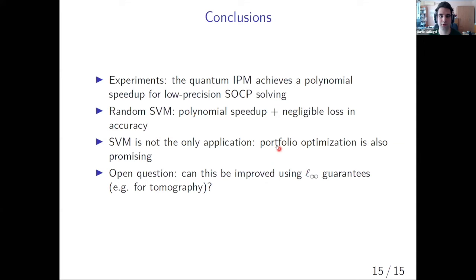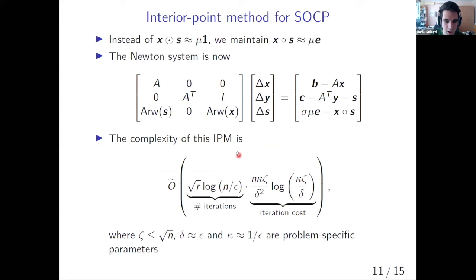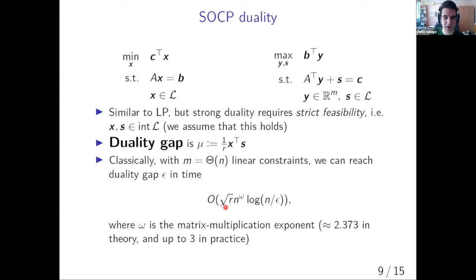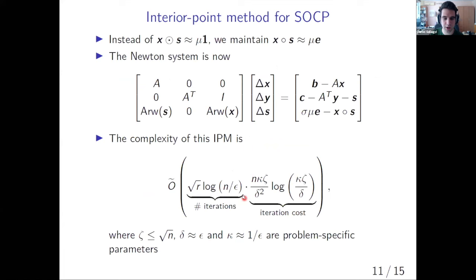Thanks so much, Daniel, for this really interesting talk. We have a couple of questions already in Slack. The first one comes from Jacinta May, which is a question for clarification. She says, I may have missed this, but how do you represent the running time for SOCP algorithms? Well, the classical running time is just this. You can think about it as a polynomial in our dimension times some logarithm of the precision. And in our case, we have still kind of the same iteration count plus the per iteration cost. Maybe I misunderstood the question. By complexity, I just mean the number of gates plus the time complexity of the quantum and the classical algorithms.